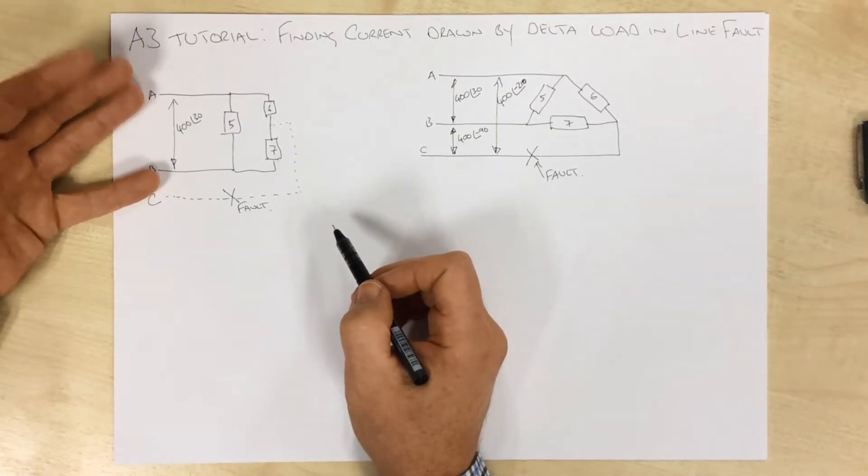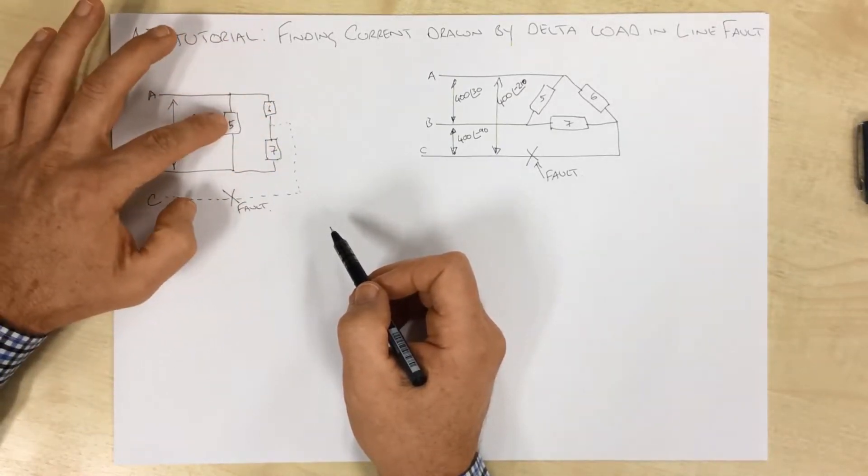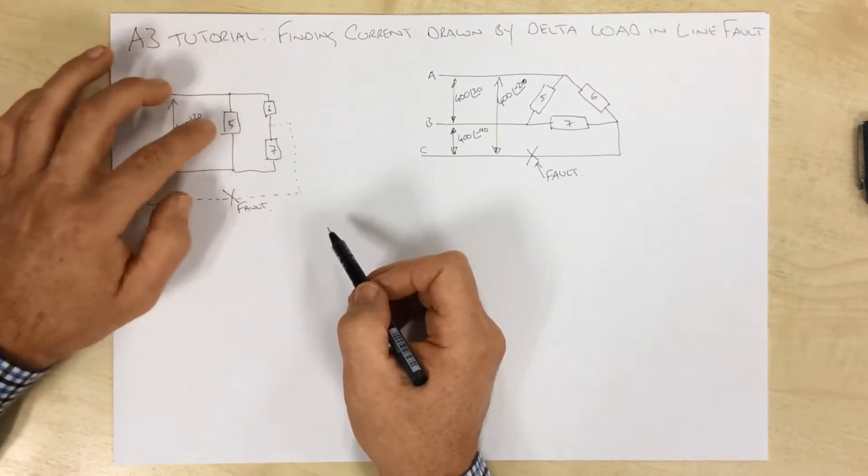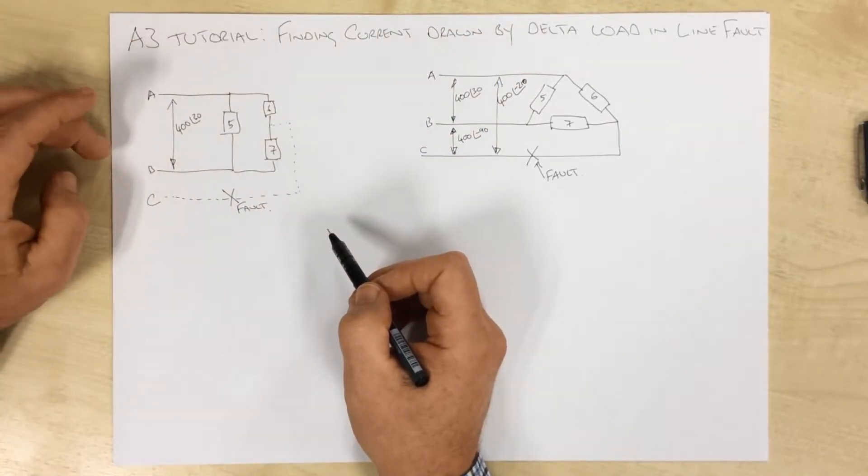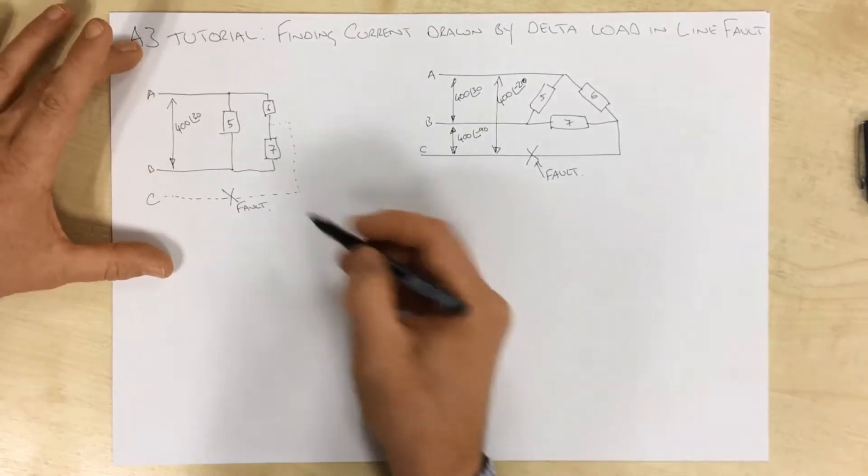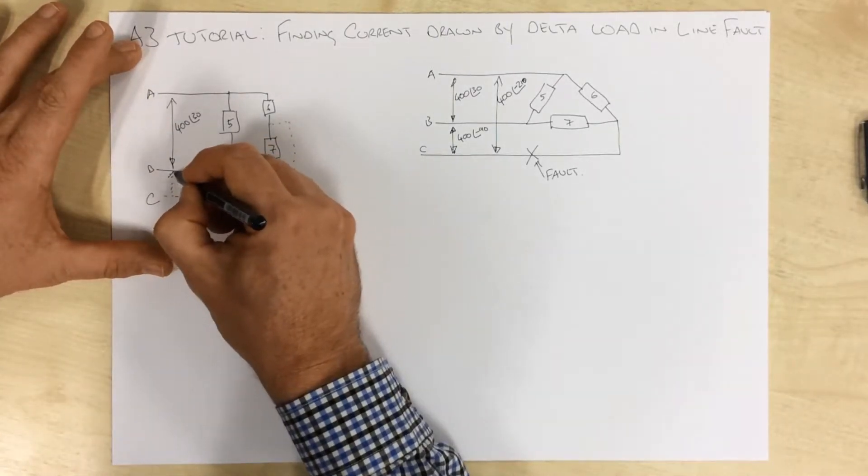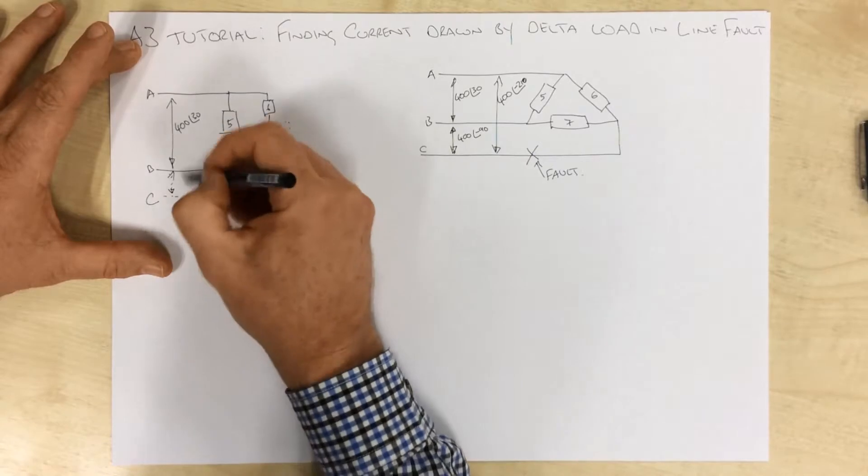It's very simple. We've got our three impedances. If it wasn't for that line fault, that is identical to that, allowing for the voltages that would exist across here.